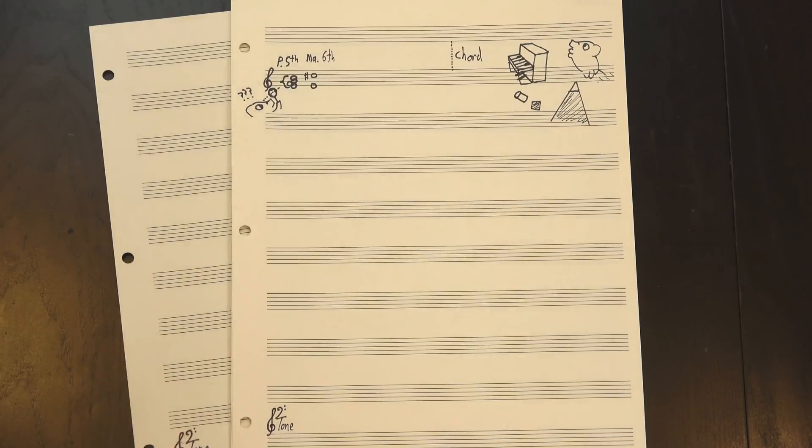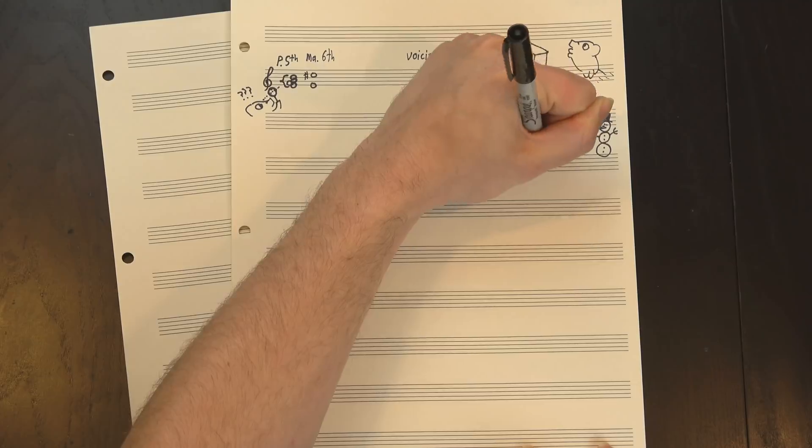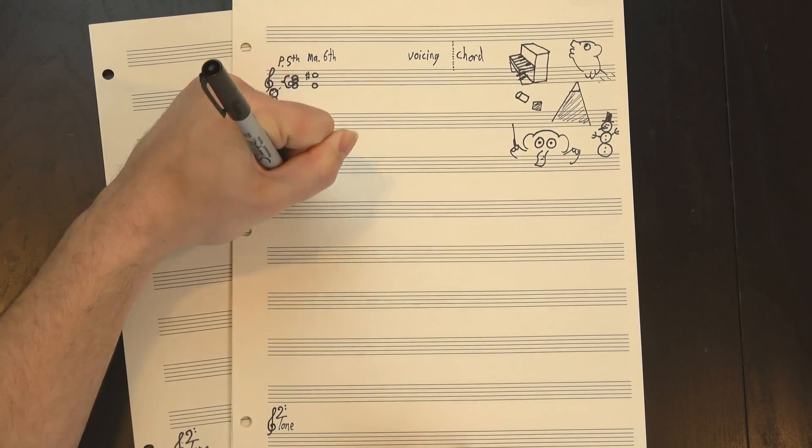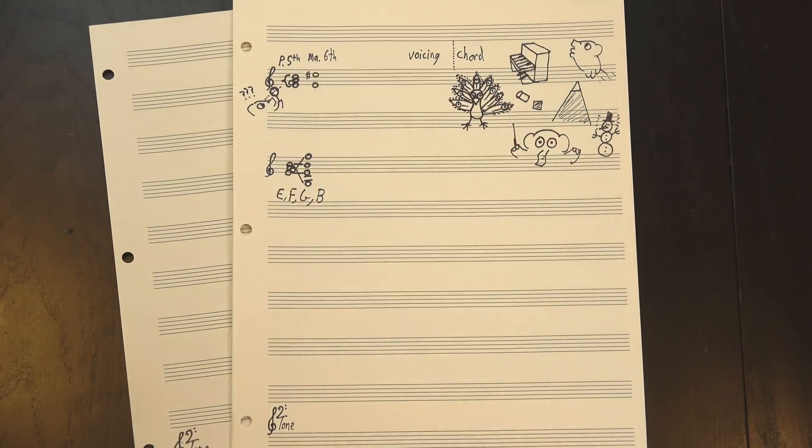But this is where we need to draw the line between a chord and a voicing. A chord is the set of notes you're playing, but a voicing is how those notes are arranged. Like this and this both contain E, F, G, and B, making them the same chord.